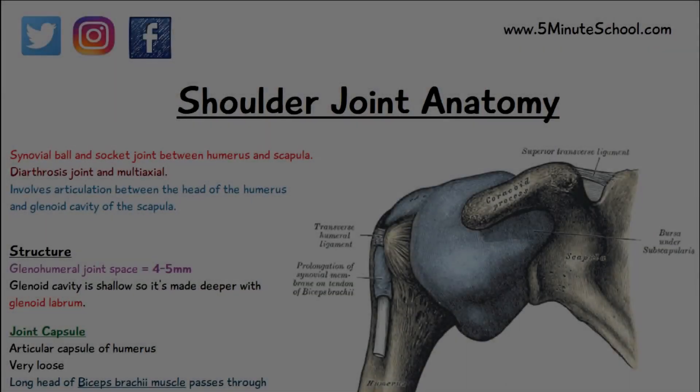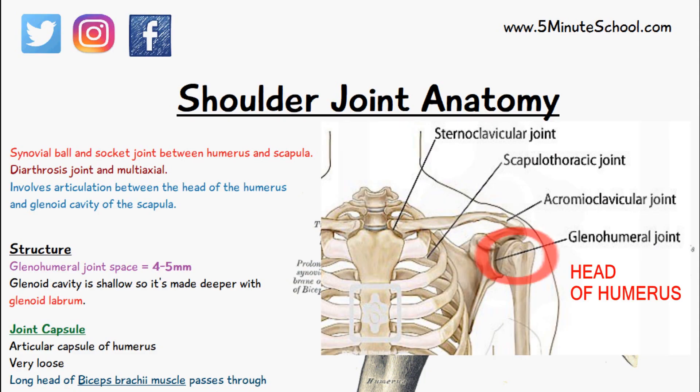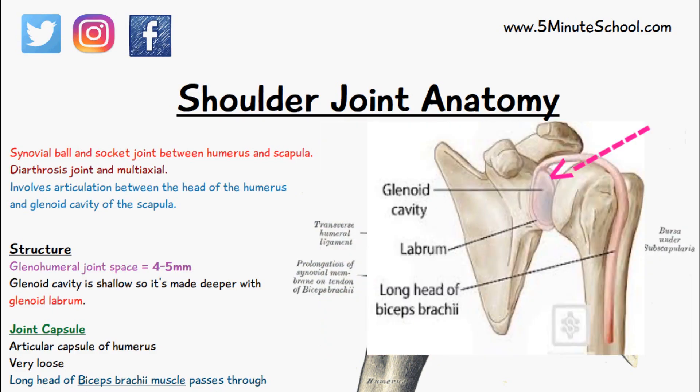In today's video we're going to be talking about the shoulder joint. It's known as a diarthrosis joint or a synovial ball and socket joint, which basically means that it allows for free movement. In fact, the shoulder joint is one of the most mobile joints in the whole body, and it involves the articulation of the head of the humerus and the glenoid cavity of the scapula.